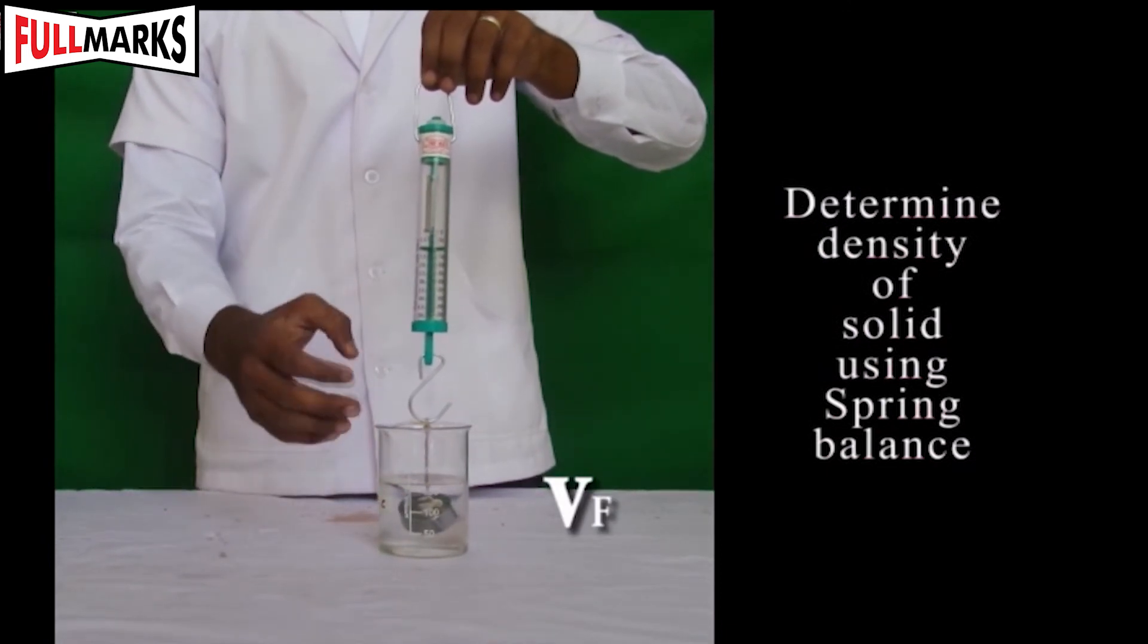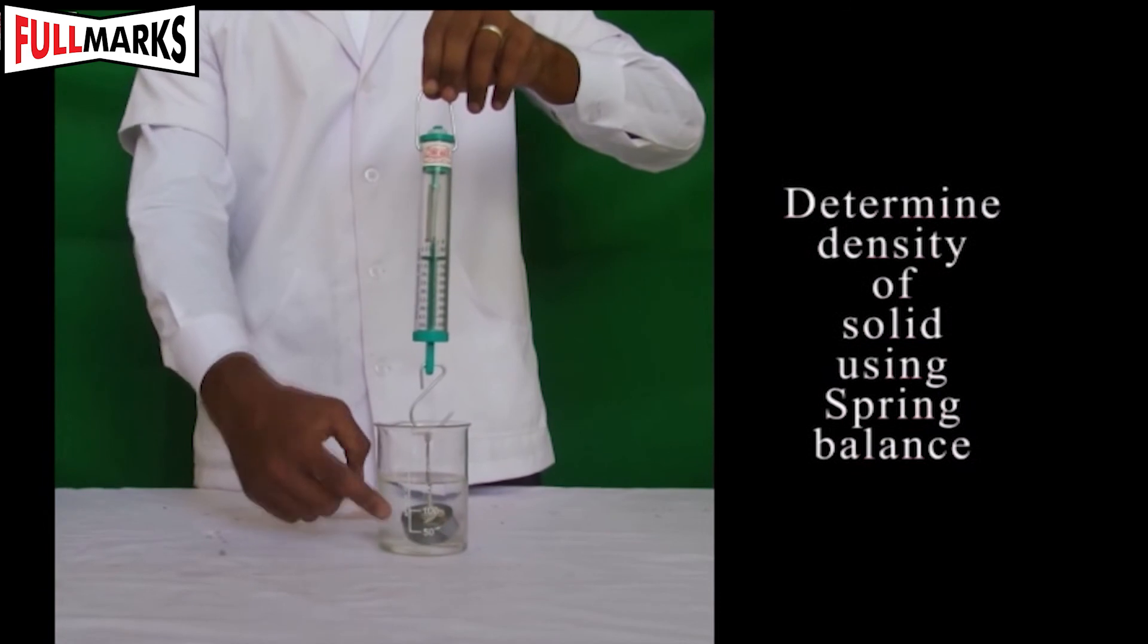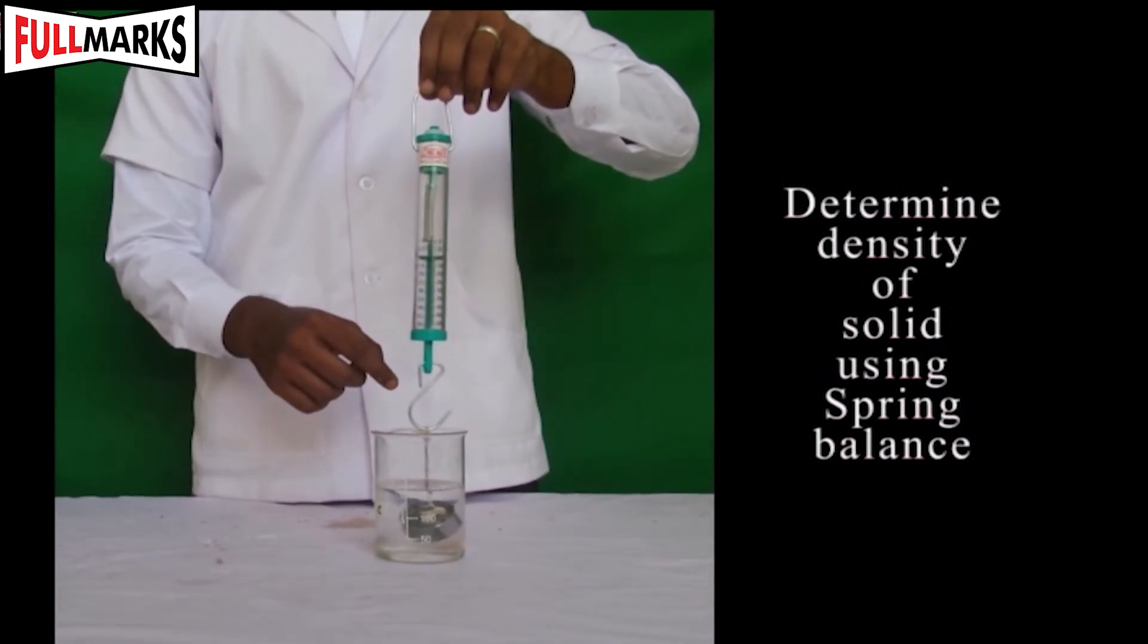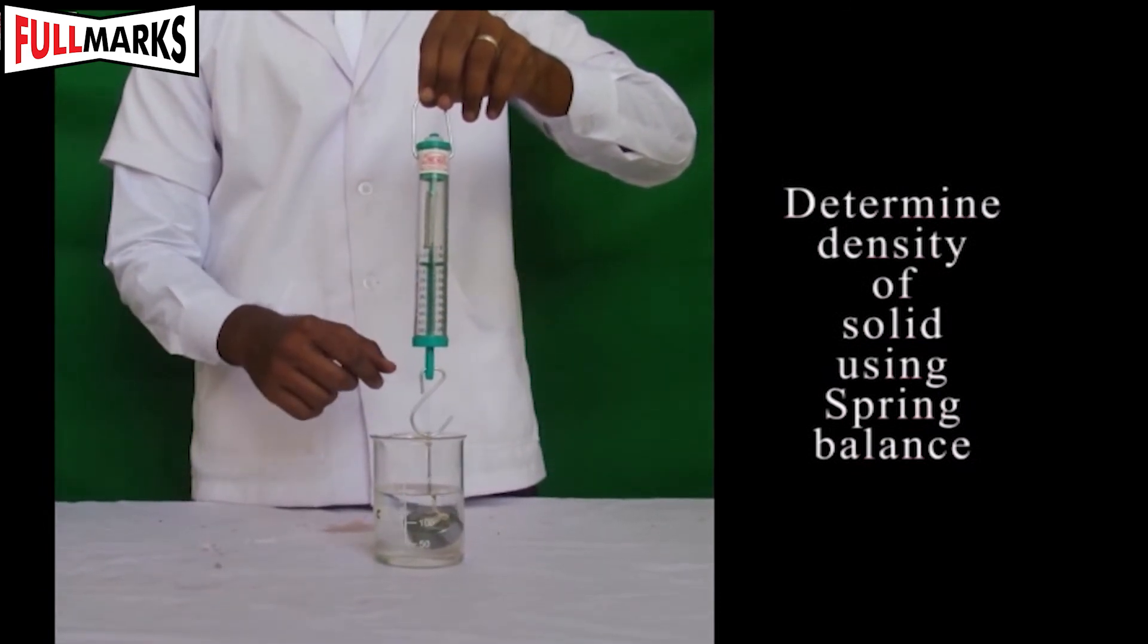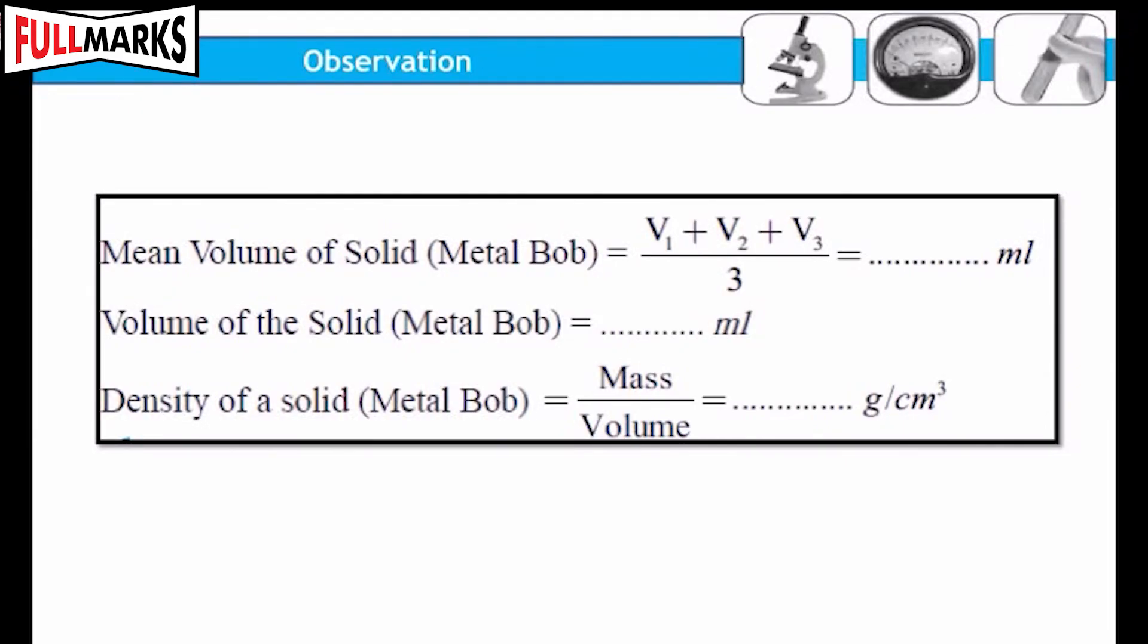Let the volume be Vf. Record all your observations in the observation table and do the calculation to find the density of the given solid metal bob.